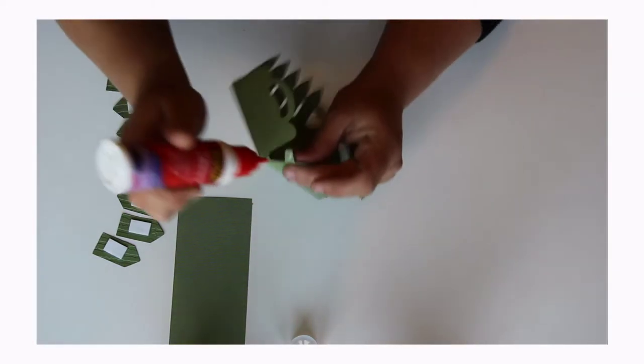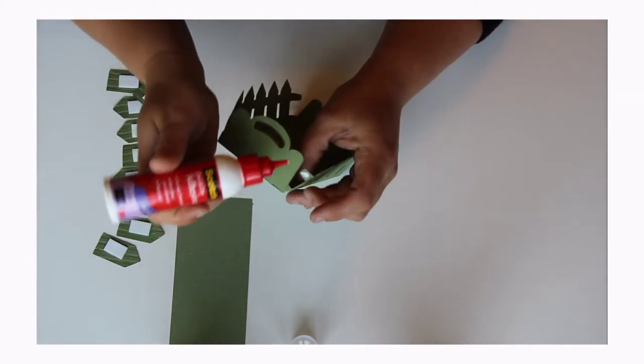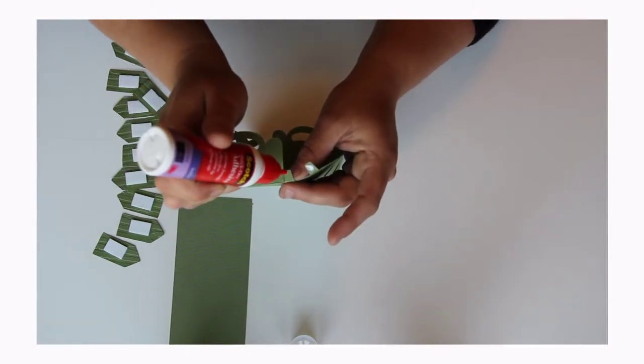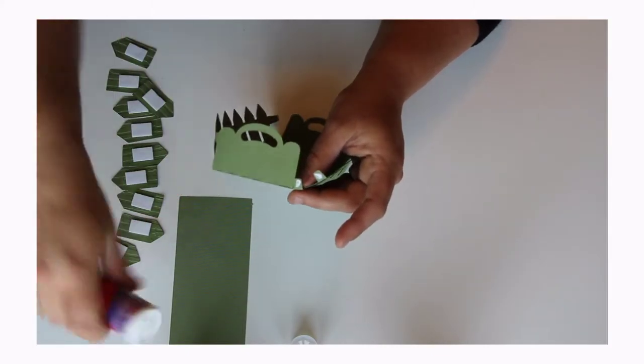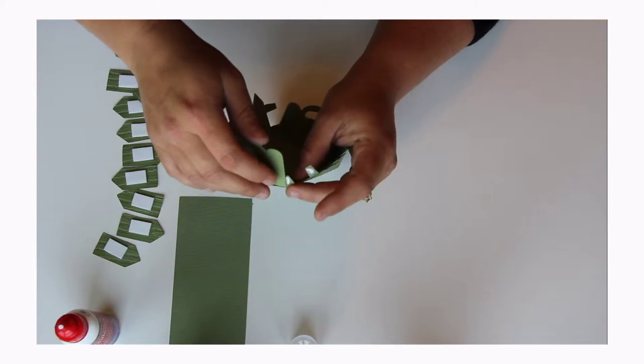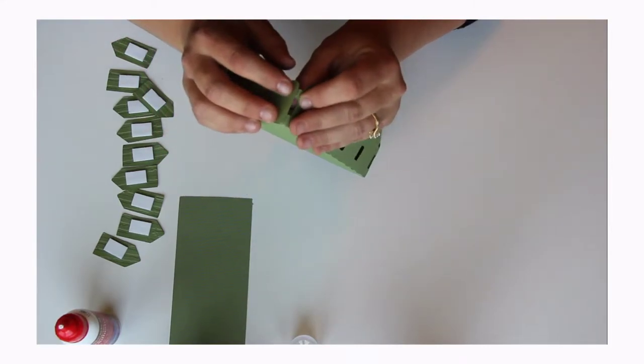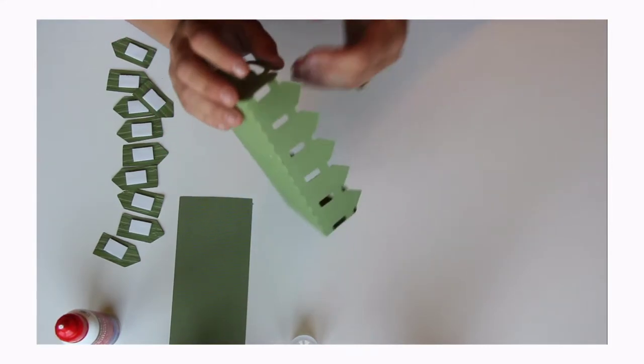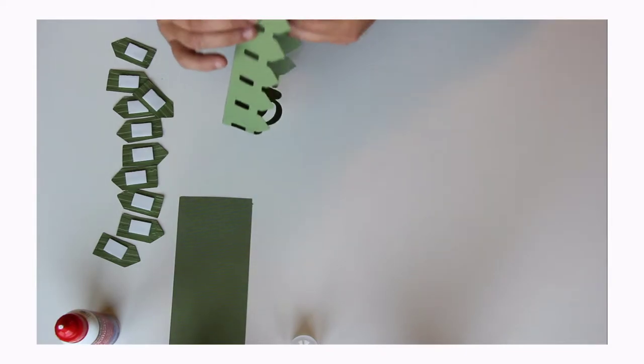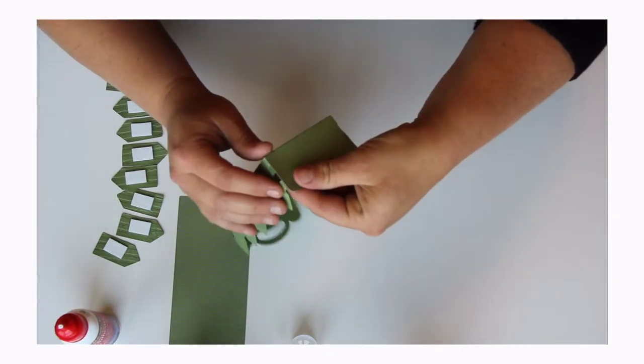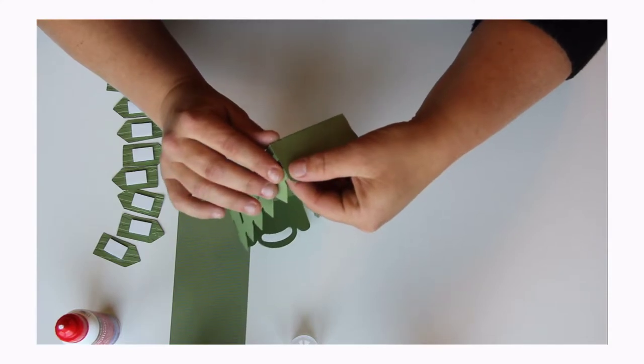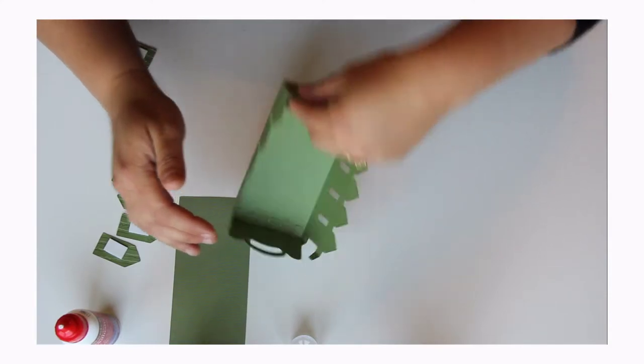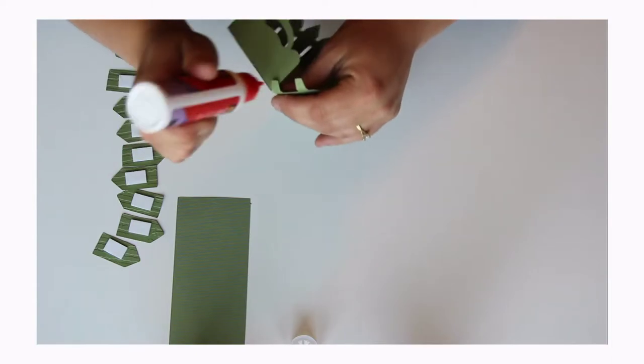We're going to put glue on the tabs right here to attach the fence side. You just glue them in place wherever they line up at. I'm going to do the same thing for the other side.